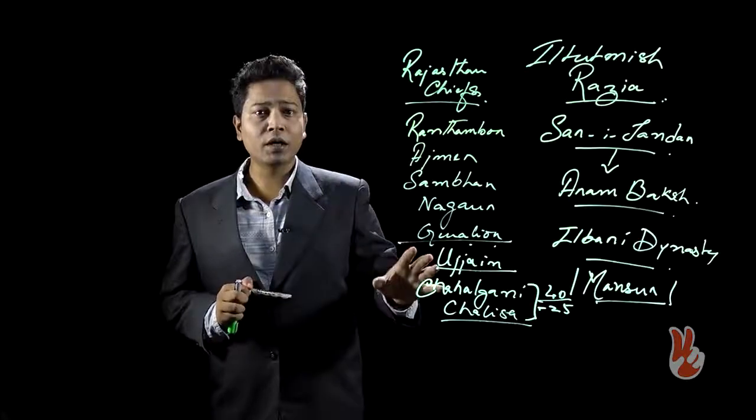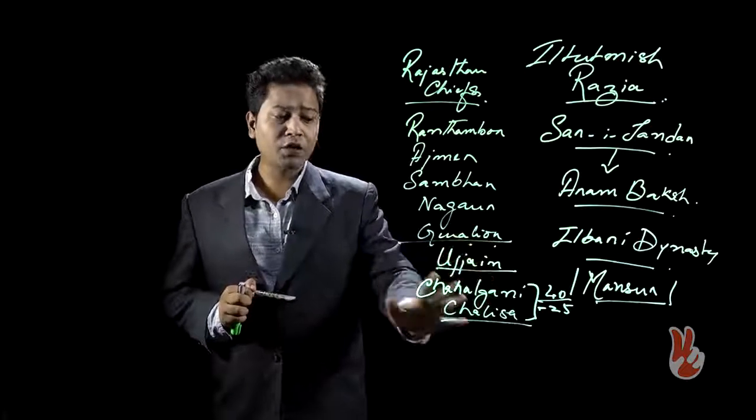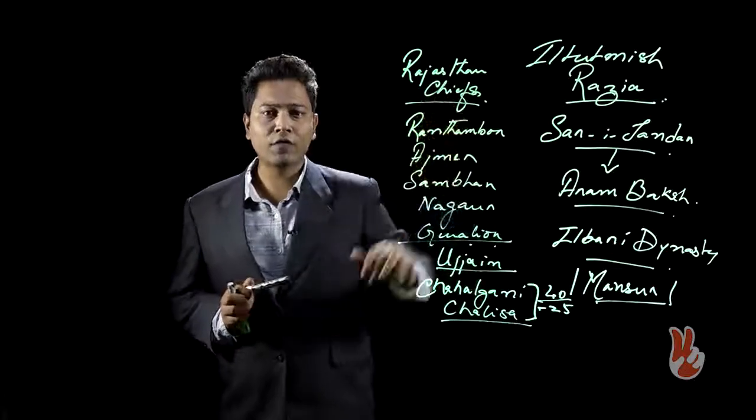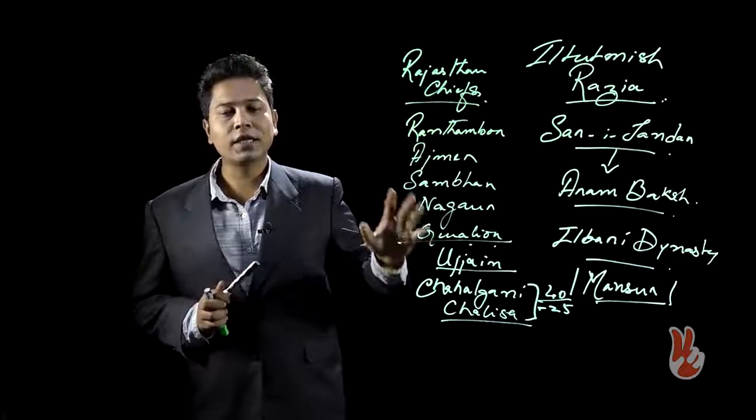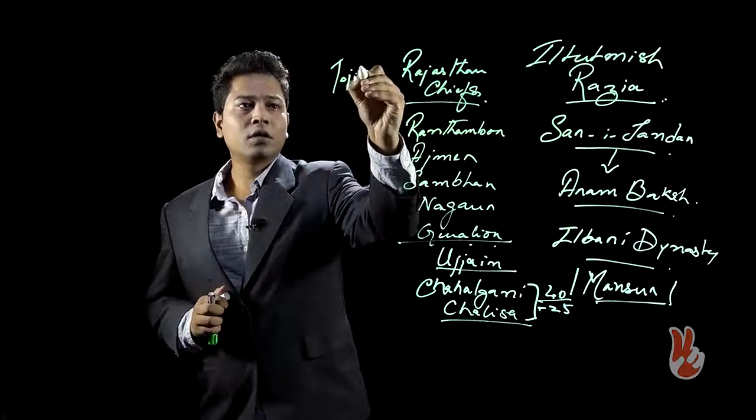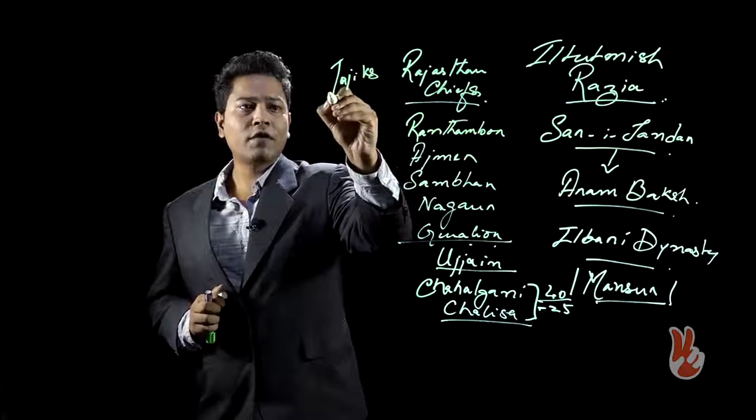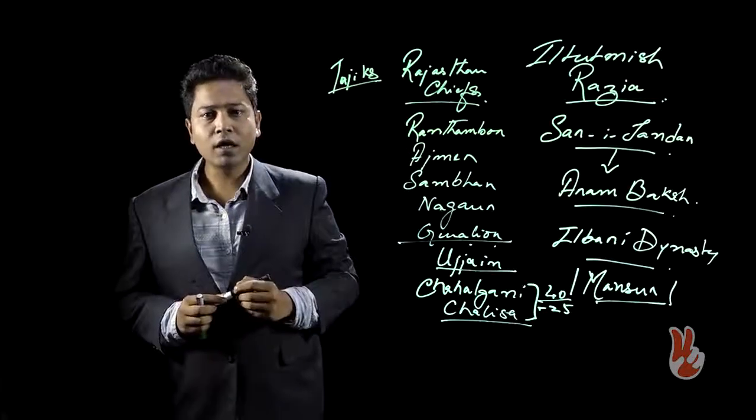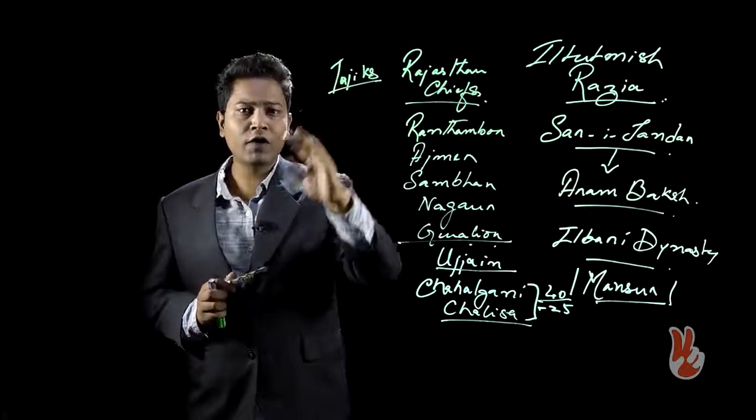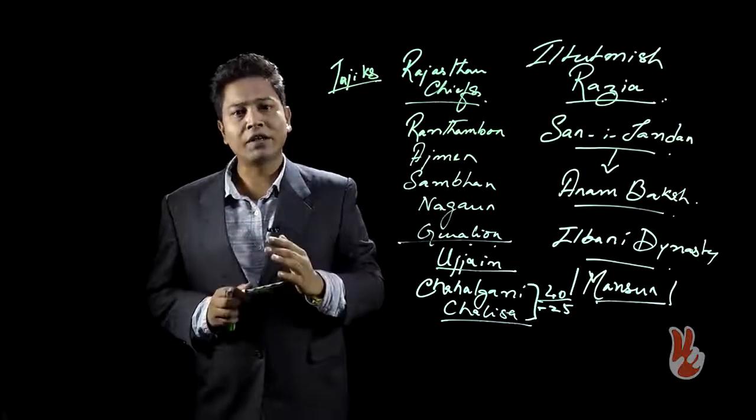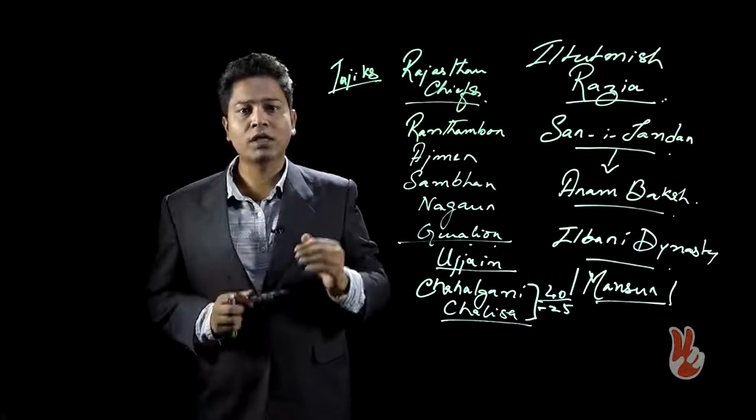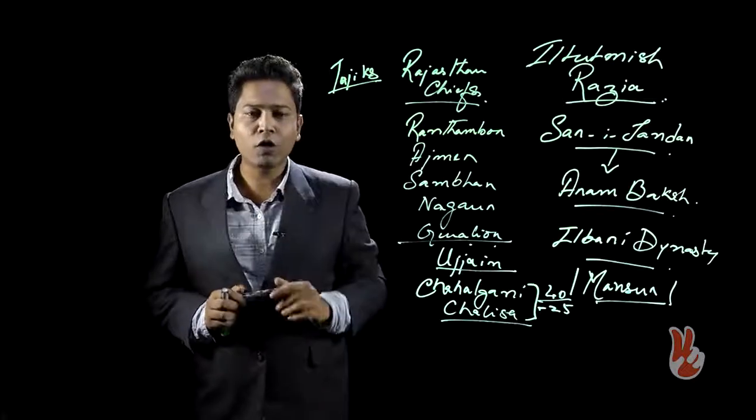Iltutmish's administrative measure of favoring people of humble origins and not just the nobility can be seen as part of this idea of keeping control over the nobility. When we go to the reign of Razia, we also see that initially Razia favored the Tajiks over the Turks. Her method of favoring the Tajiks was not actually well received by the Turks and it was one of the reasons because of which she is later captured by Altuniya.